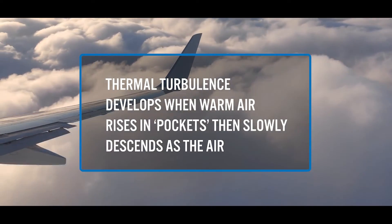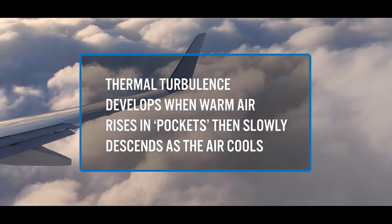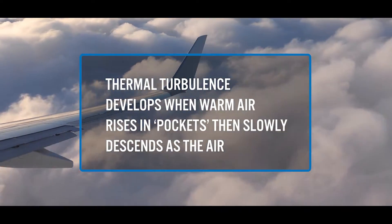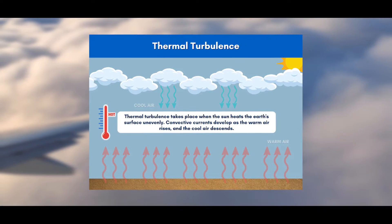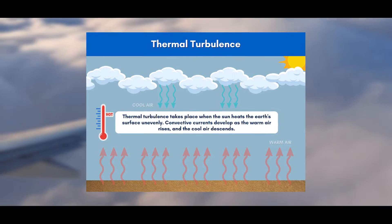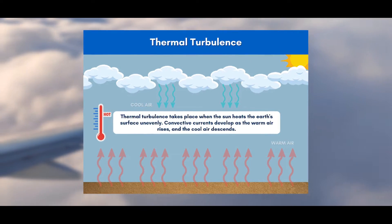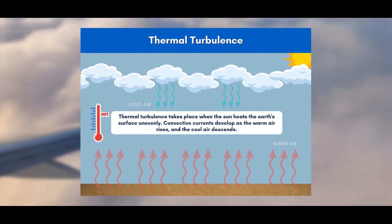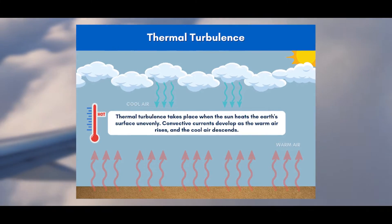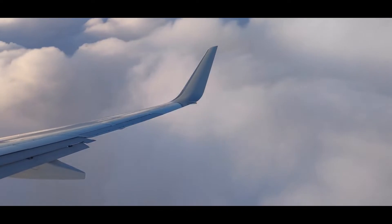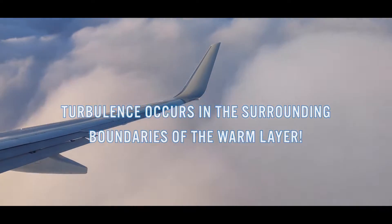Thermal turbulence develops when warm air rises in pockets, then slowly descends as the air cools. Under normal atmospheric conditions, air temperature usually decreases with altitude. When these conditions are reversed, cool air under a narrow, warm layer forms temperature inversion turbulence. Turbulence occurs in the surrounding boundaries of the warm layer.